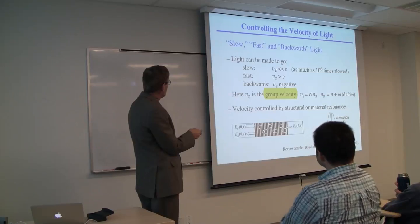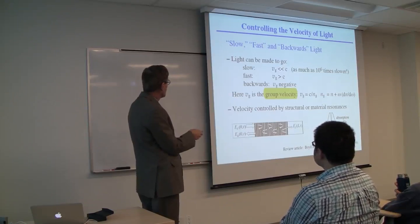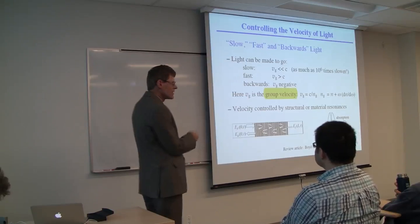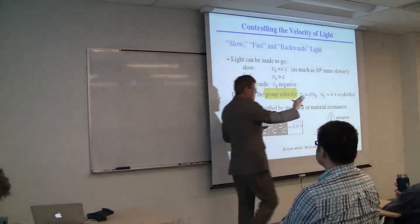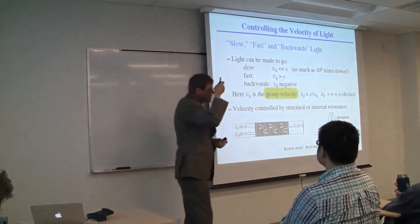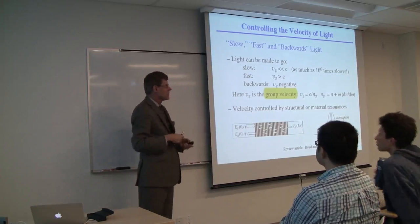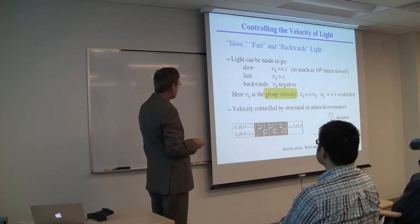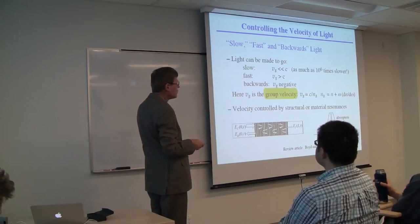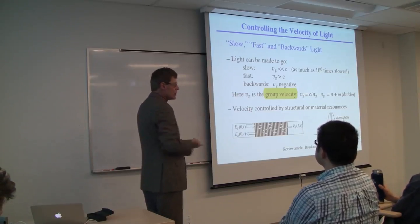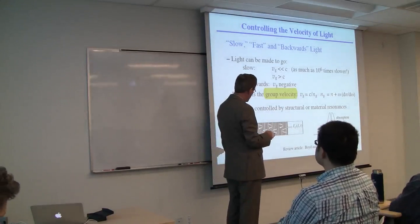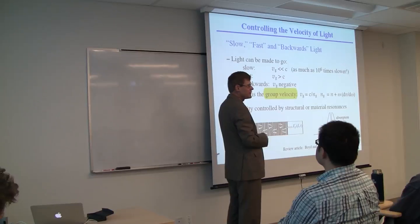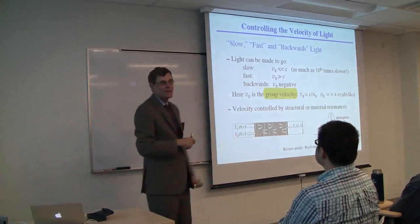We talk about slow light, fast light, or backwards light, depending on whether we make the group velocity very much less than C, or larger than C, or even backwards. The group velocity is given by the speed of light. We can define a group index, which is the group velocity analog of the refractive index. The group index is given by the refractive index plus omega times dn/domega.